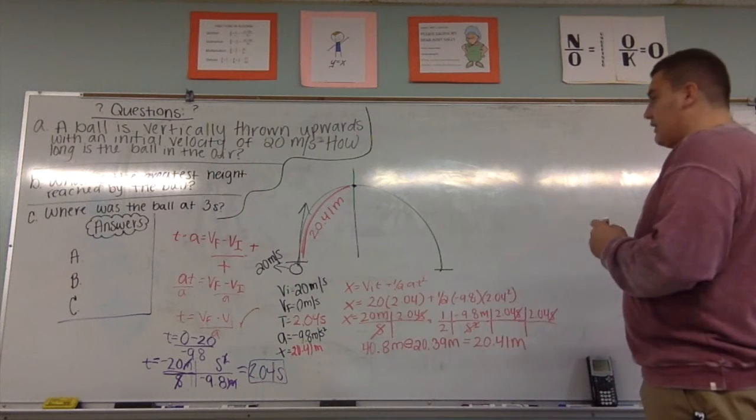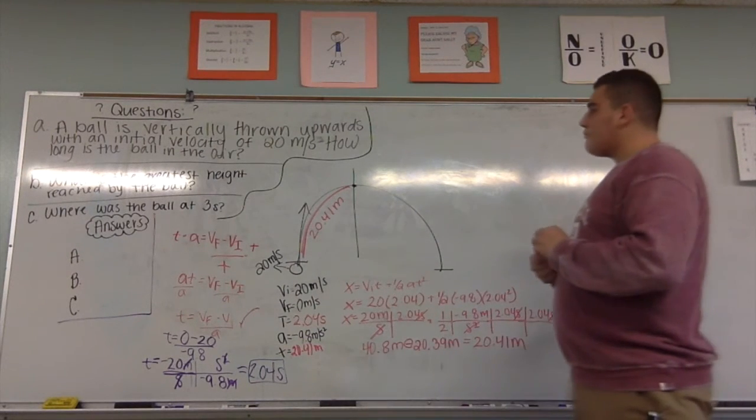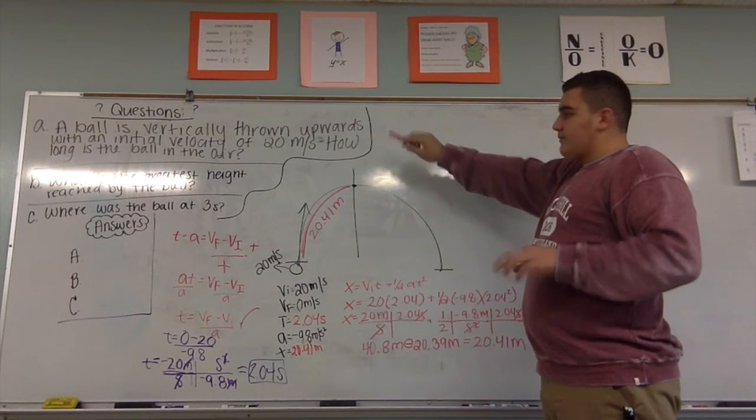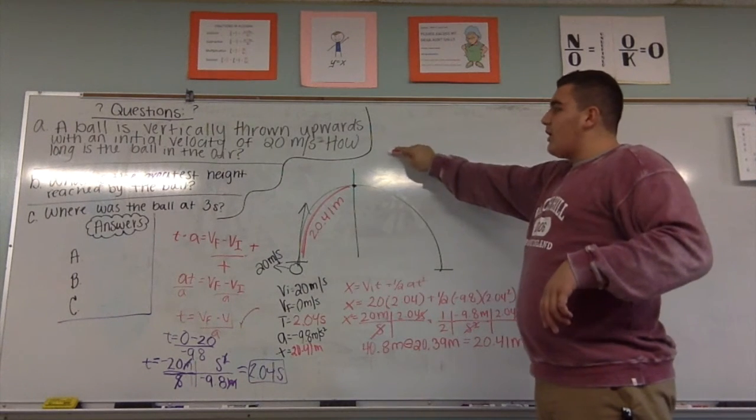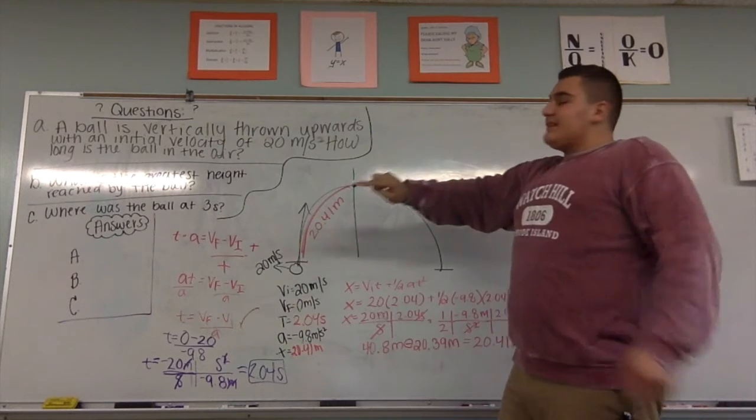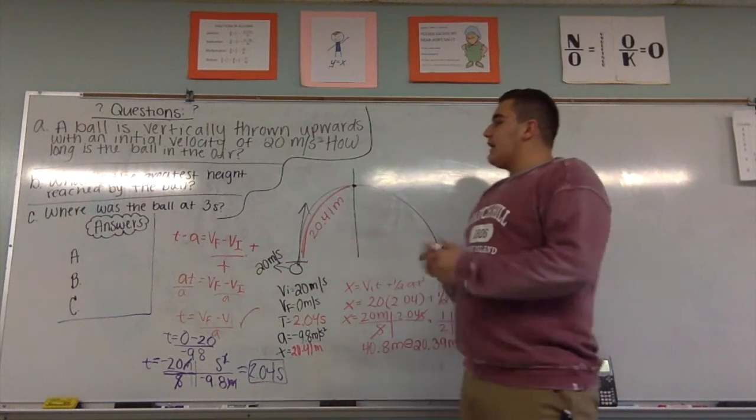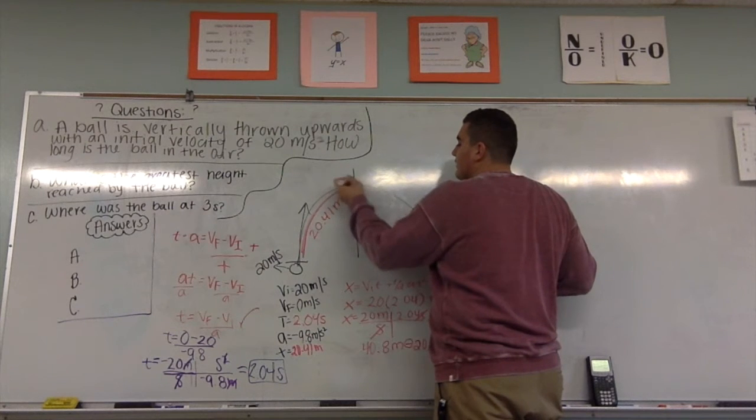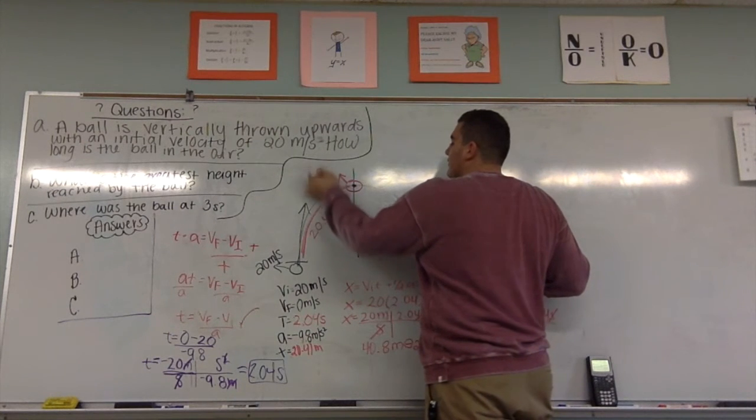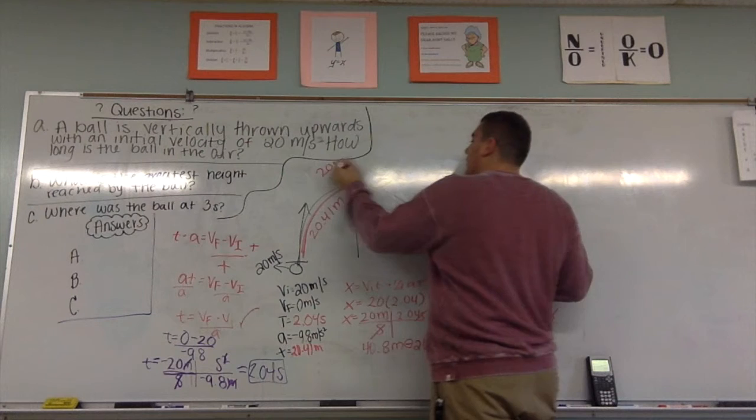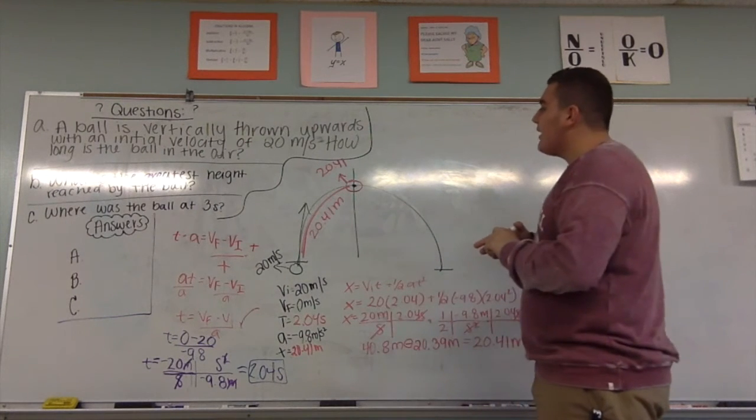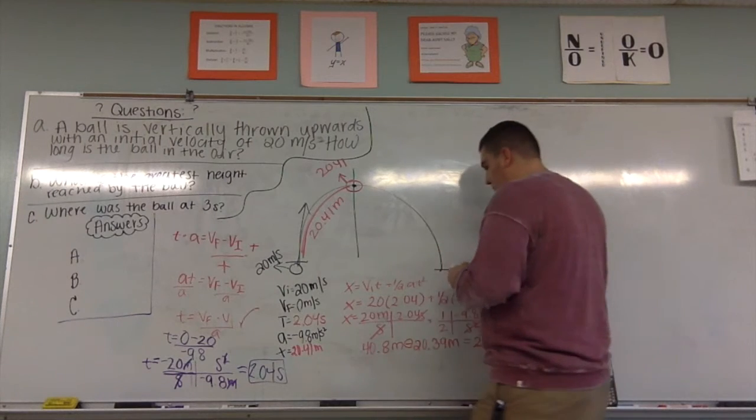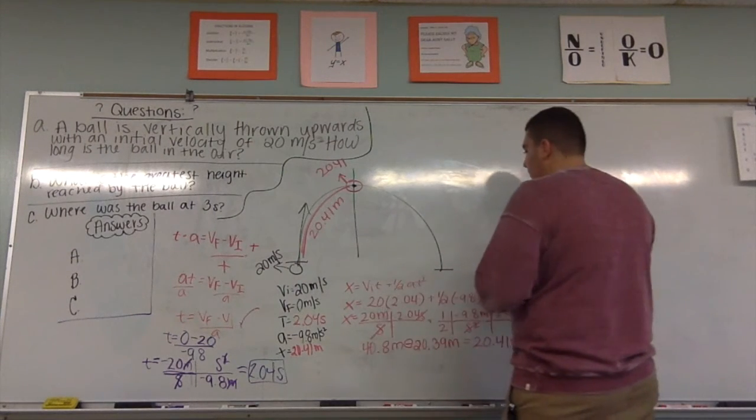Okay, so that solves our first question. How high is the highest, how long, I'm sorry, that solves our question B, what is the greatest height reached by the ball, is 20.41, right here. Okay, going back to question A, how long is the ball in the air, we have to find now the total amount.